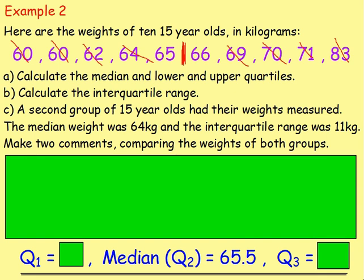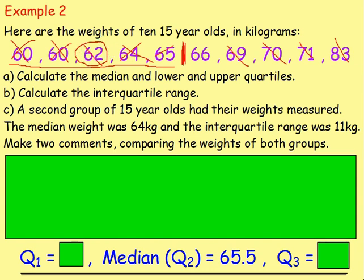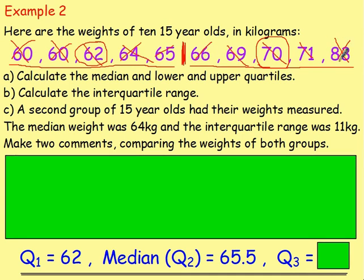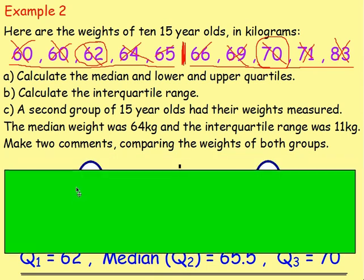For the lower quartile, we're looking at 60, 60, 62, 64 and 65 — note that 65 was not taken out as the median, so we still include it. With these five numbers, cross off one from the left and one from the right, and we find 62 in the middle, so the lower quartile Q1 is 62. For the upper quartile, looking at 66, 69, 70, 71 and 83 — the number in the middle is clearly 70, so Q3 is 70.